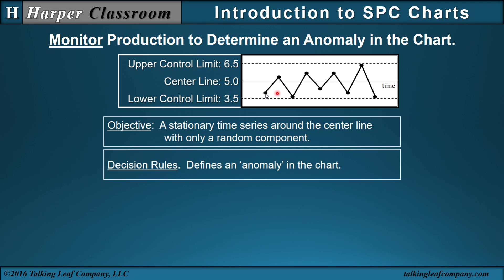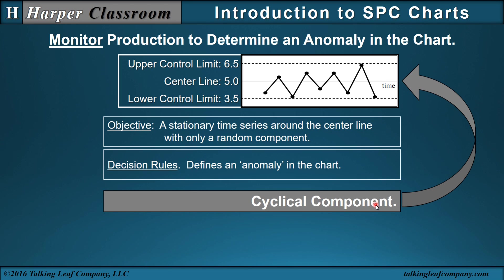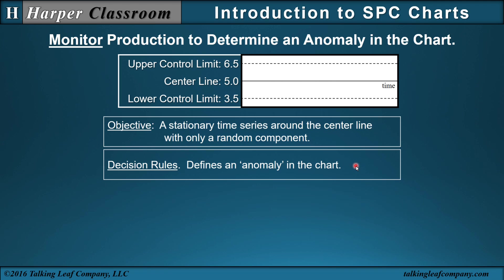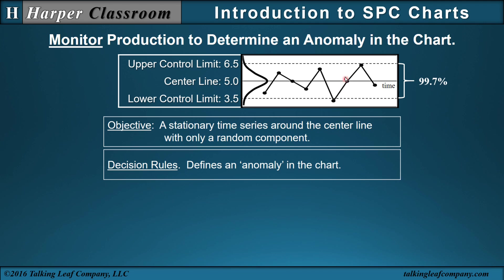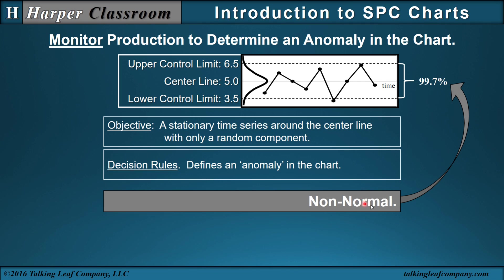Another example: if we have some type of repeatable pattern, that would be a cyclical component — again, an anomaly. Additionally, the assumption is that the randomness around the center line follows a normal distribution. From the empirical rule, approximately 99.7% of the population lies between plus or minus three standard deviations of the mean, meaning that out of a thousand measurements, on average 997 should be between the limits and three should be outside. Anything deviating from this, either within or outside the limits, constitutes a non-normal anomaly.